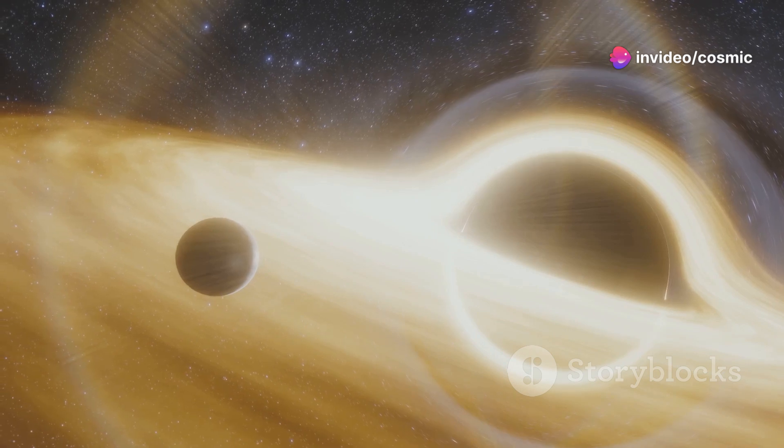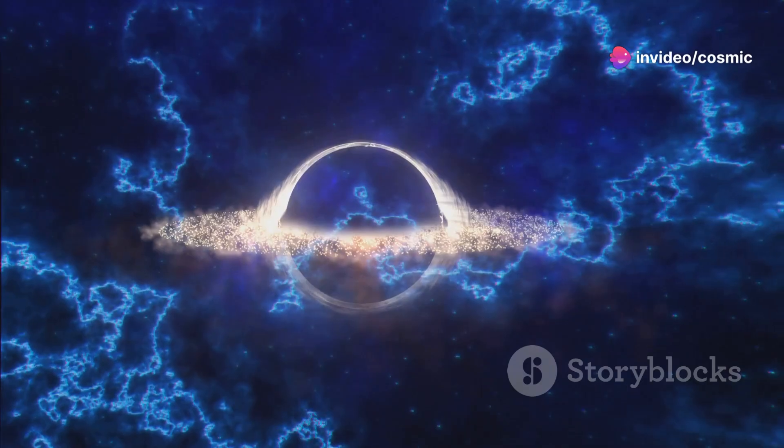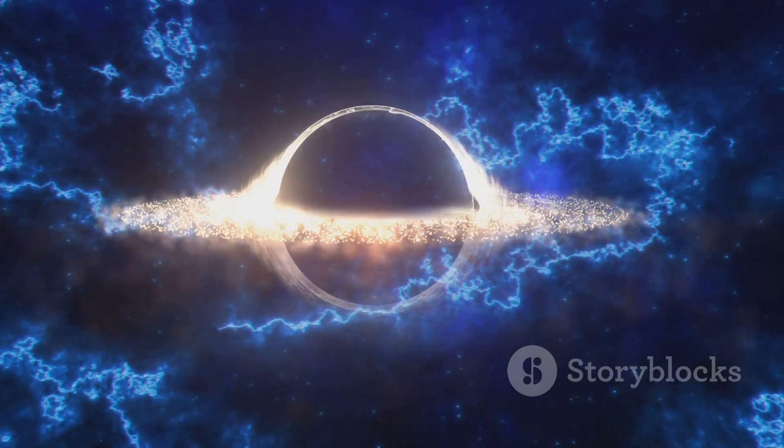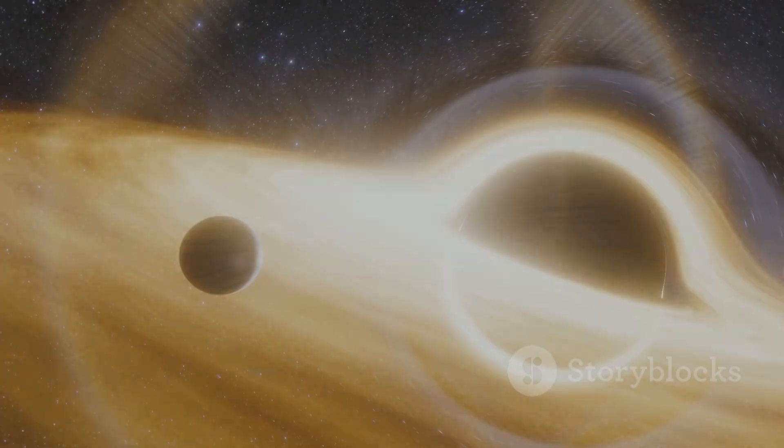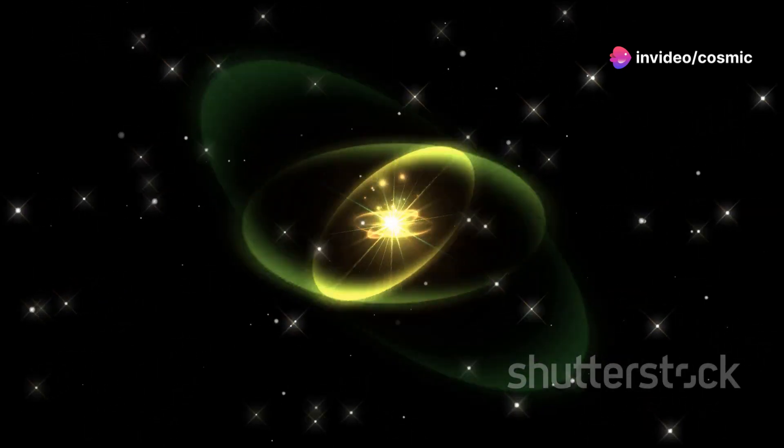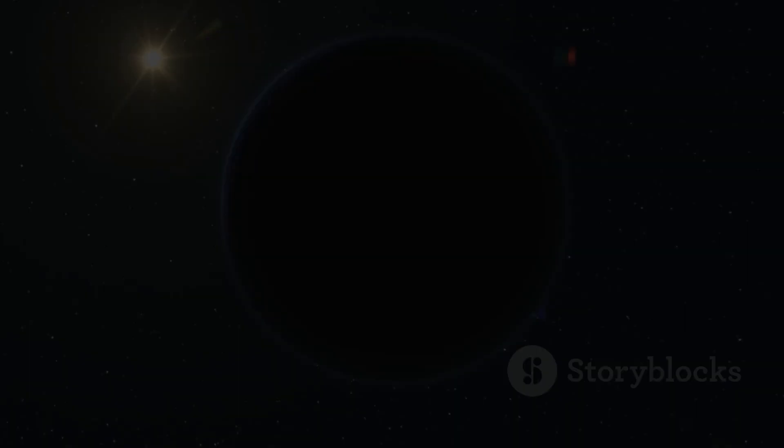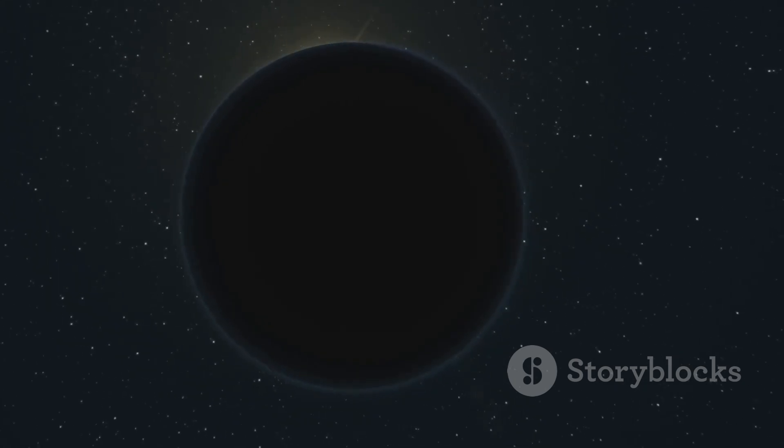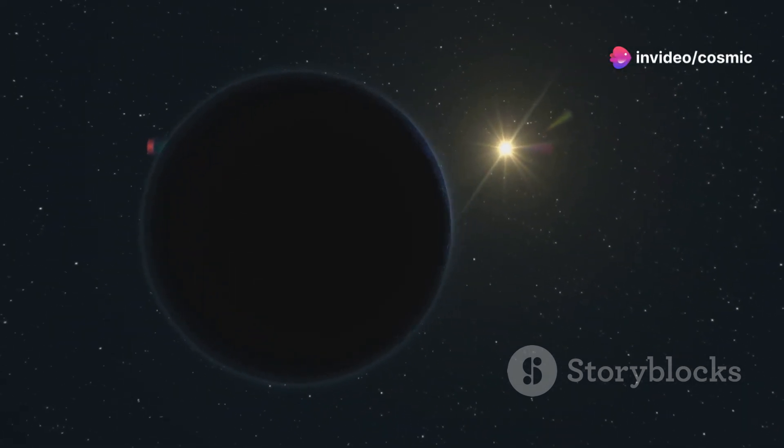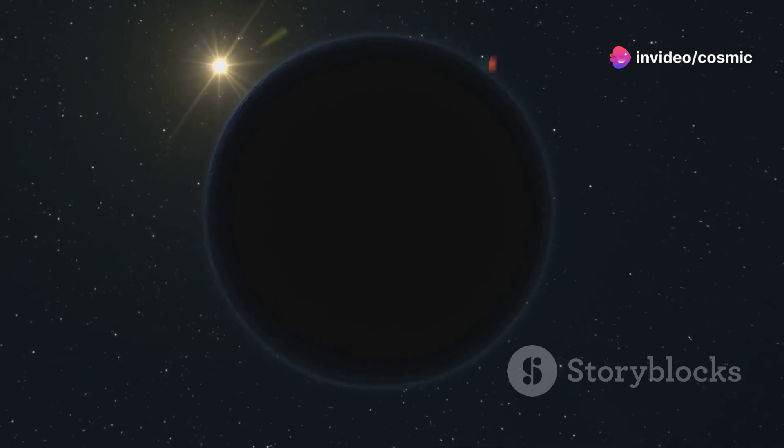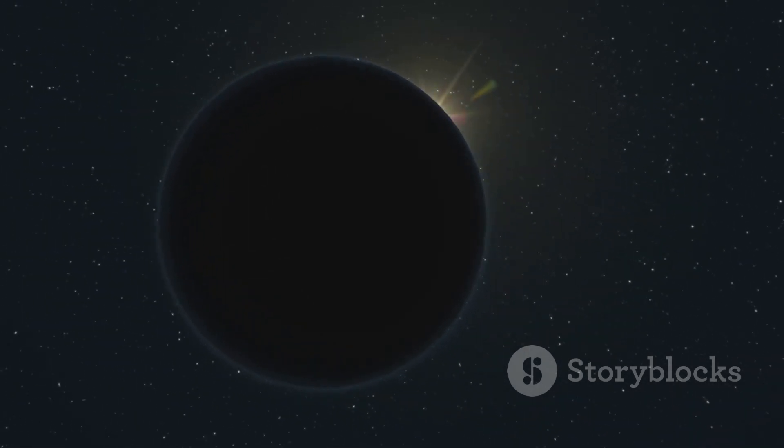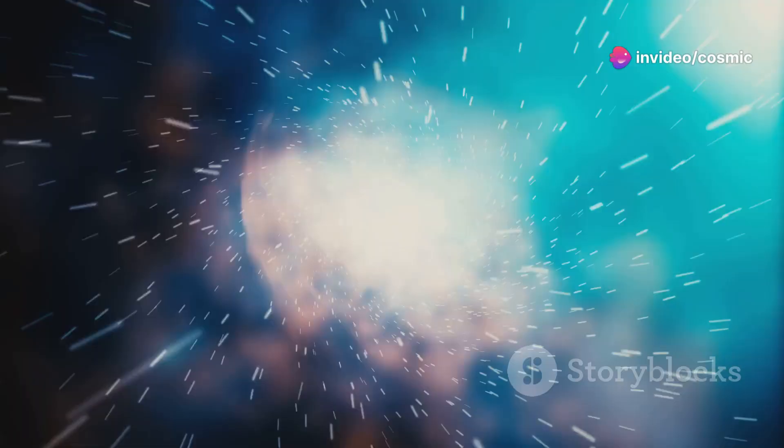You might think that spinning at 716 rotations per second would tear PSR J1748-2446AD apart. However, this incredible object is held together by the immense gravity of its densely packed neutrons. The incredible density we discussed earlier creates such strong gravity that it overcomes the centrifugal forces trying to rip the pulsar apart. Think of it like an extremely powerful glue holding everything together. In the case of PSR J1748-2446AD, the mass is so immense and the radius so small that the gravitational pull is extraordinarily strong. This intense gravitational field ensures that the star's structure remains intact despite its rapid rotation. It provides valuable insights into the behavior of matter under extreme conditions.